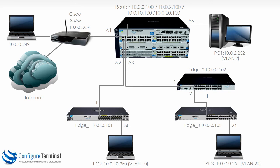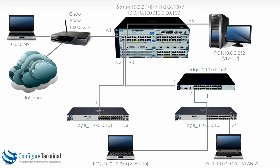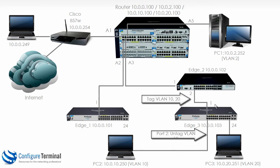To give another example of how VLANs can be used, let's move PC2 to Edge 3 but keep it in VLAN 10. That means we're going to configure the link between the 5406 and Edge 2 to carry two tagged VLANs — VLAN 10 and VLAN 20 — and do the same on the link between Edge 2 and Edge 3. We don't need to change the IP address of PC2 as it's still in the same VLAN. We just need to configure port 2 on Edge 3 as an untagged port, and configure port 1 as tagged for VLAN 10 and 20. Do the same on ports 1 and 2 on Edge 2 as well as A3 on the HP router.